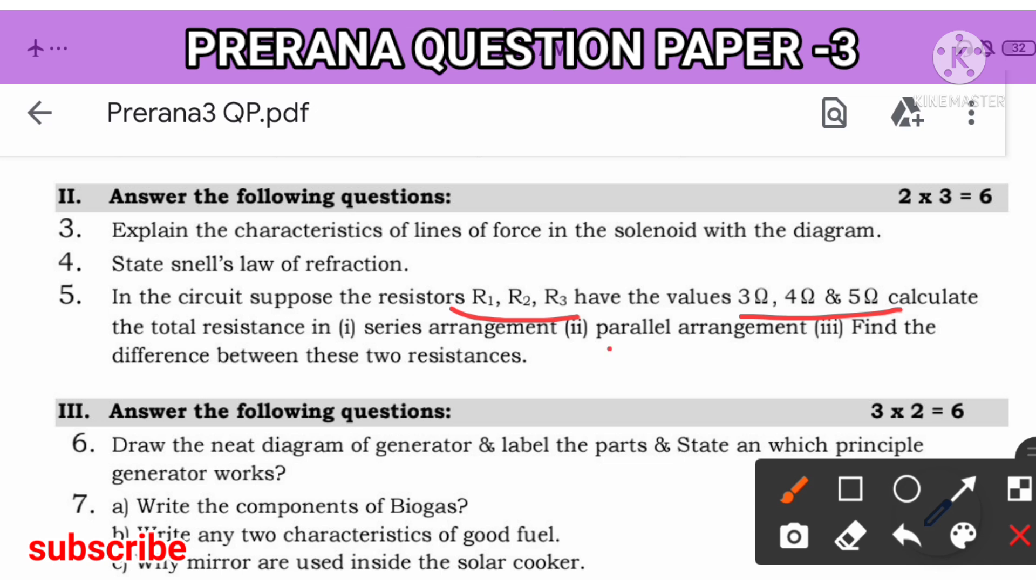When it comes to parallel arrangement, it is 1 by R1 plus 1 by R2 plus 1 by R3. So, 1 by 3 ohm, 1 by 4 ohm, 1 by 5 ohm. You just need to add and solve. You will get answer. It's very easy.